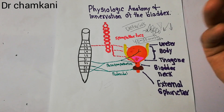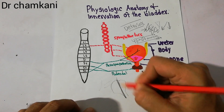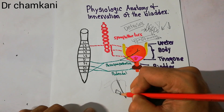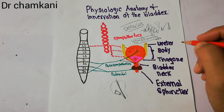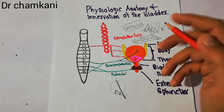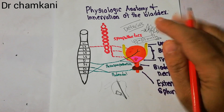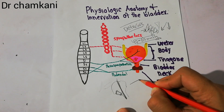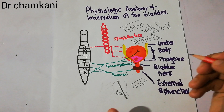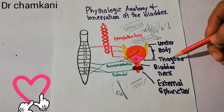If we cut the bladder, on the posterior side we can see a triangle-shaped area known as the trigone. The mucosa of this trigone is very different from the mucosa of the rest of the bladder — the underlying structure of the trigone is smooth, while the mucosa of the rest of the bladder has rugae. The trigone is also a very sensitive area.